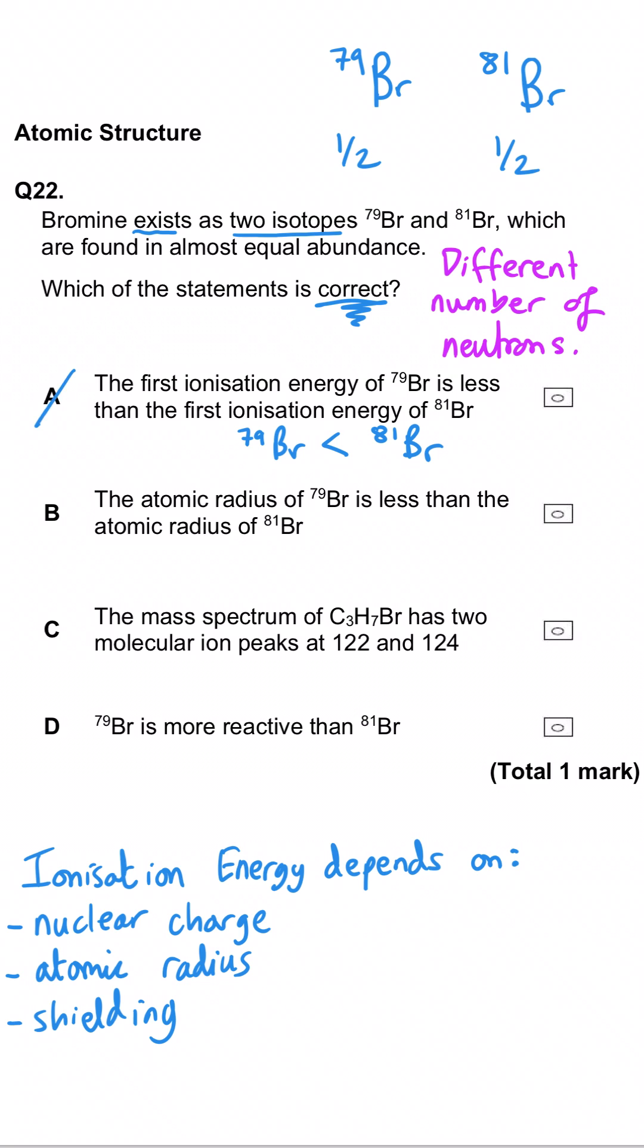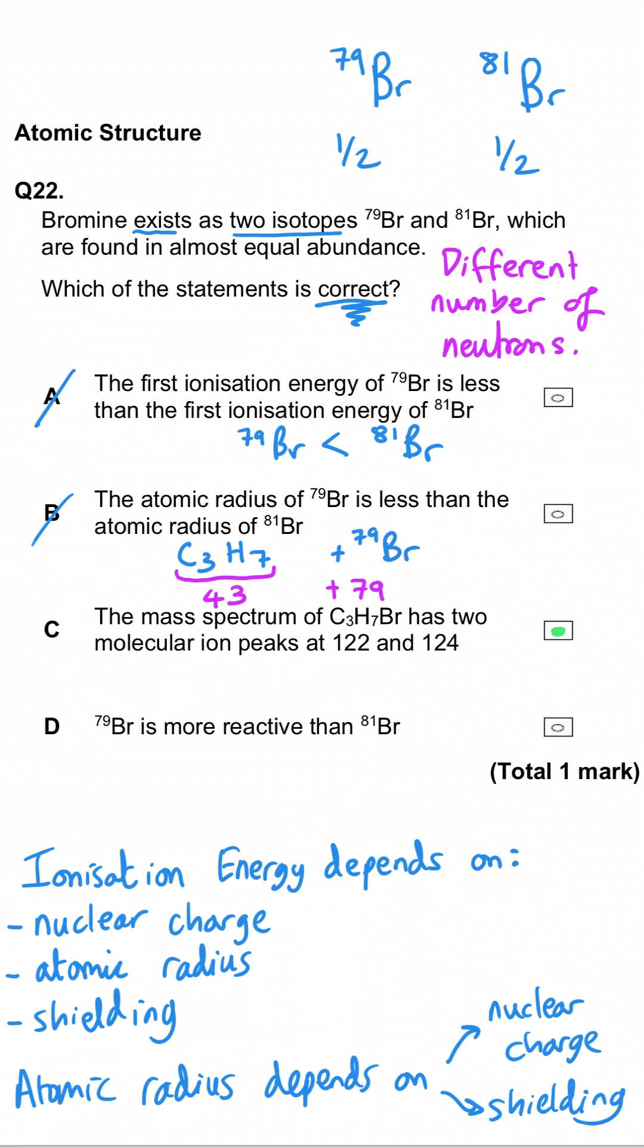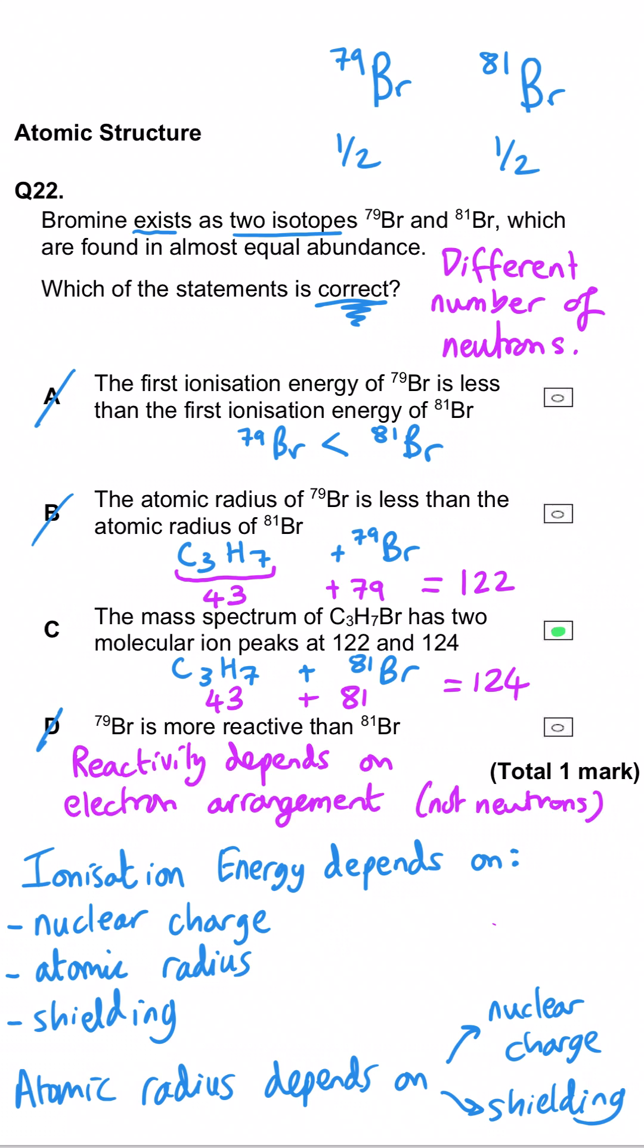So A is incorrect. B is also incorrect because atomic radius only depends on nuclear charge and shielding. C is the correct answer because when we add up the mass of C3H7 we get 43. If we add 79 to it we get 122 and 81 gives us 124. So those are the two molecular ion peaks we would have. D is therefore incorrect because reactivity depends on the number of electrons not neutrons and they have the same number of electrons.